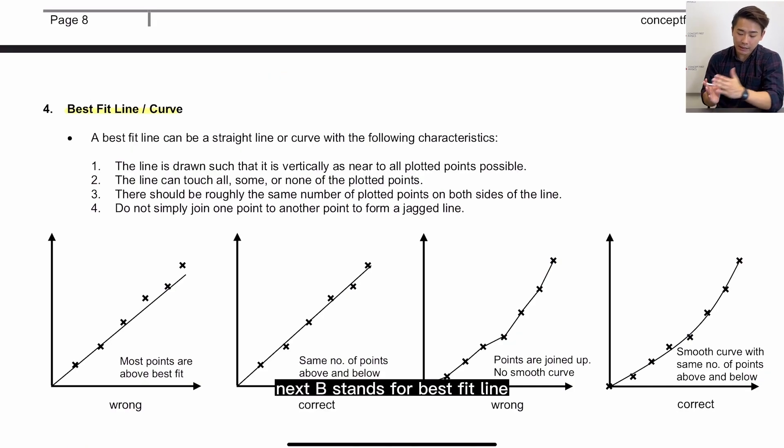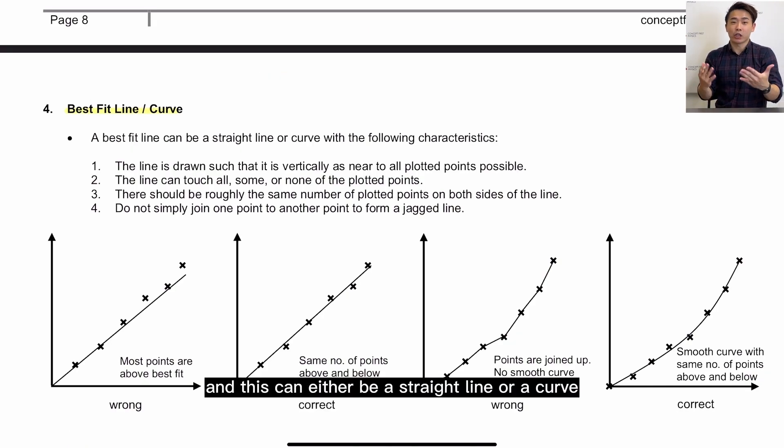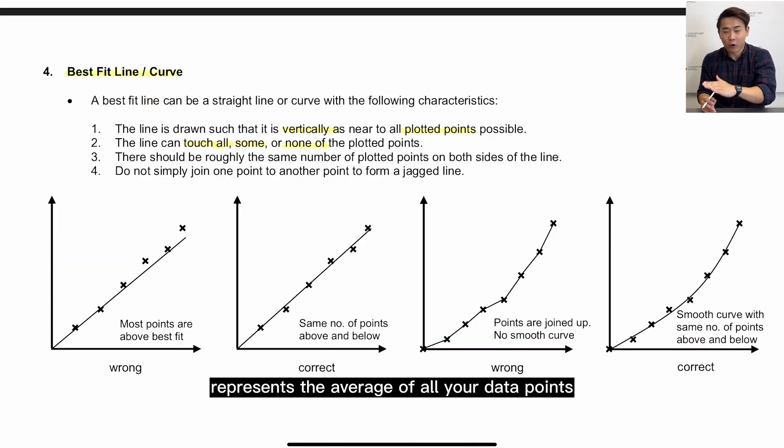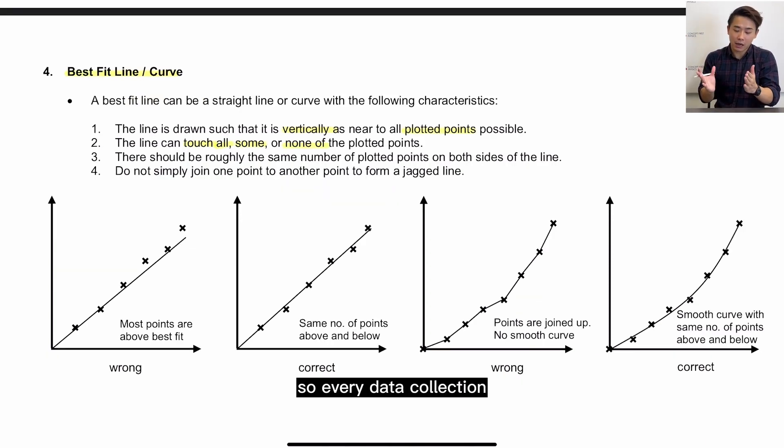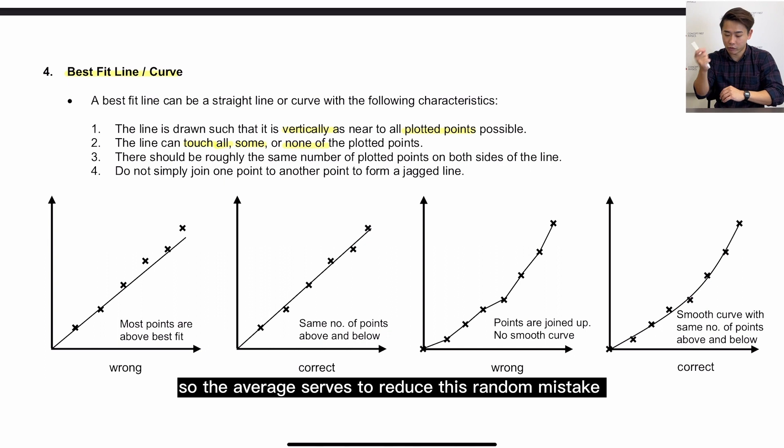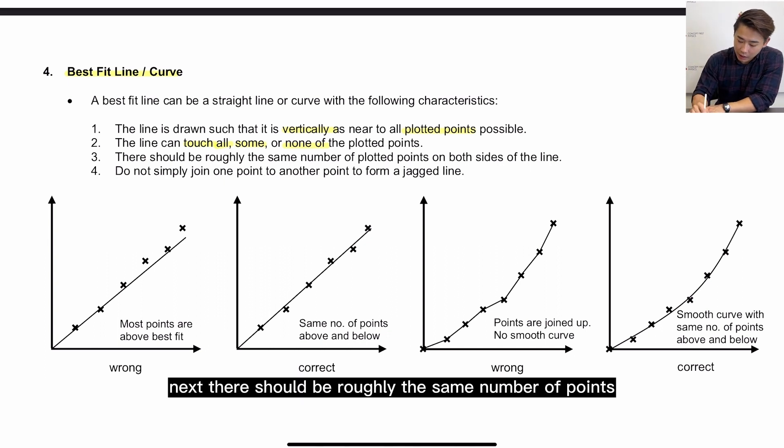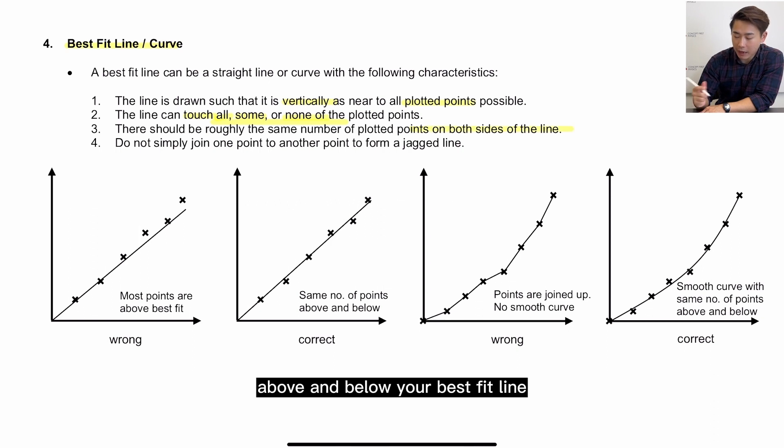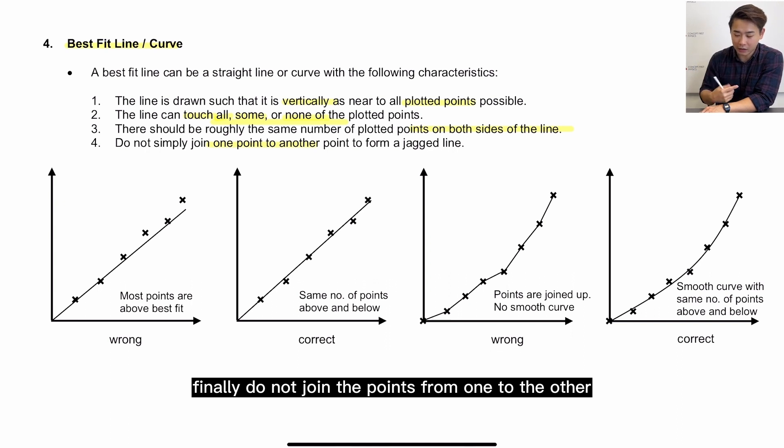Next, B stands for best fit line, and this can either be a straight line or a curve. Now this line represents the average of all your data points. So every data collection will always involve some kind of random mistake, so the average serves to reduce this random mistake. Next, there should be roughly the same number of points above and below your best fit line. Finally, do not join the points from one to the other as though it's a kindergarten jotter book.